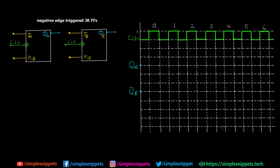On screen we have two negative edge triggered JK flip-flops. We have J input, K input, and we're tracking Q as the output. The bubble at the clock represents negative edge triggering, and the triangle represents that it is edge triggered.